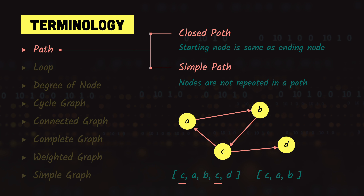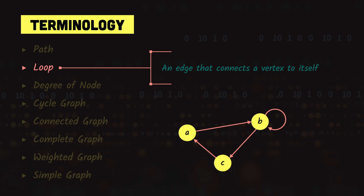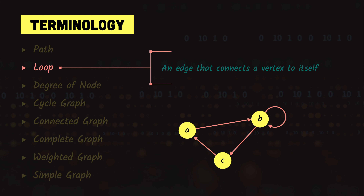Next we have loop. A loop is an edge that connects a node to itself. For example, if node B is connected to itself by an edge, that edge is called a loop.